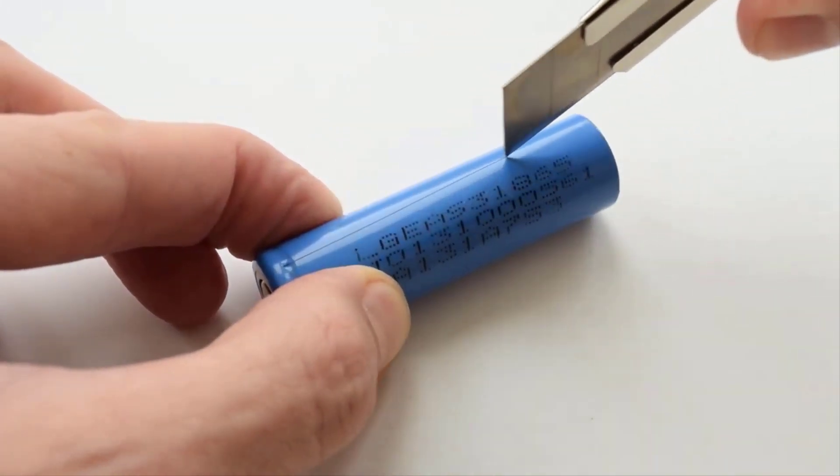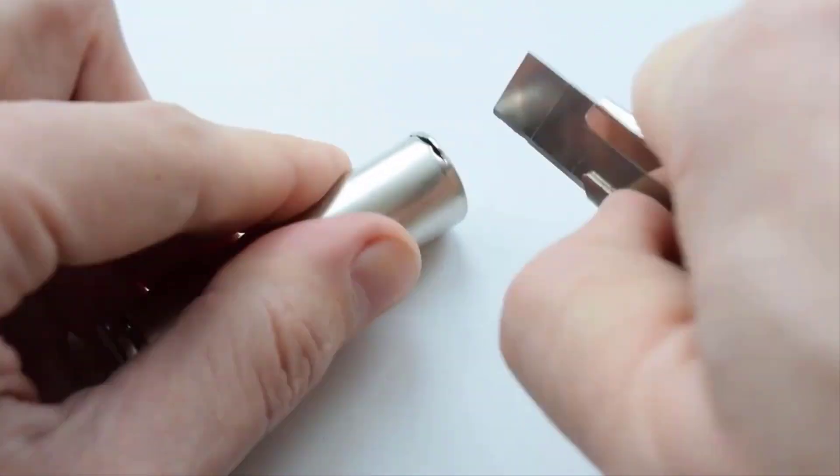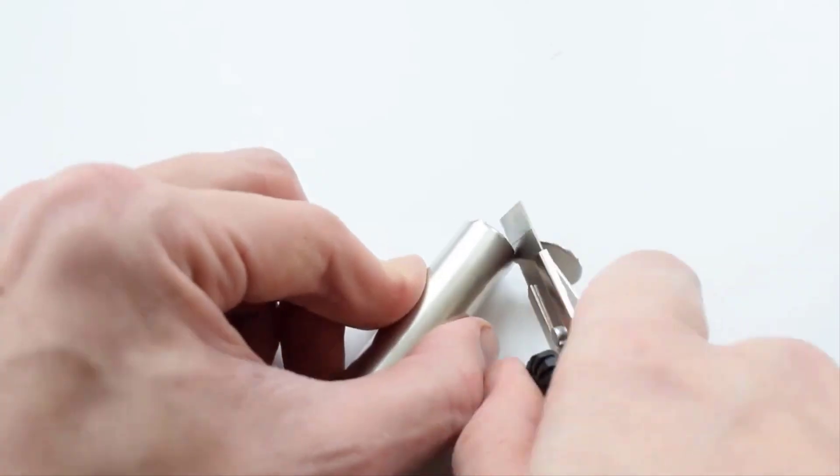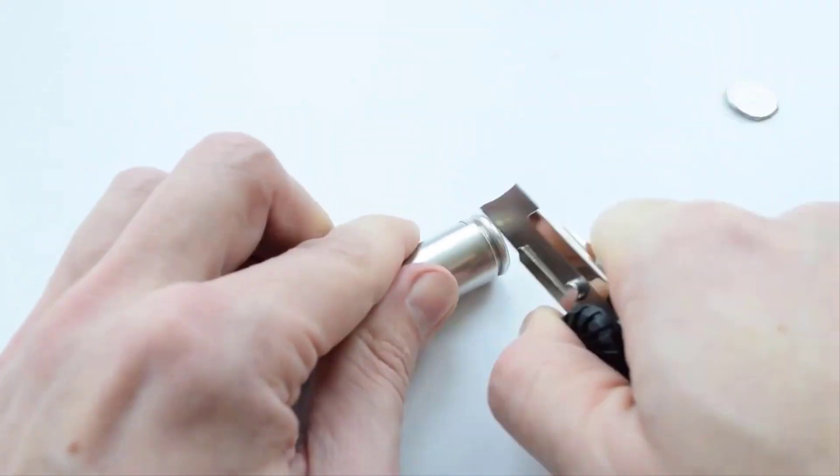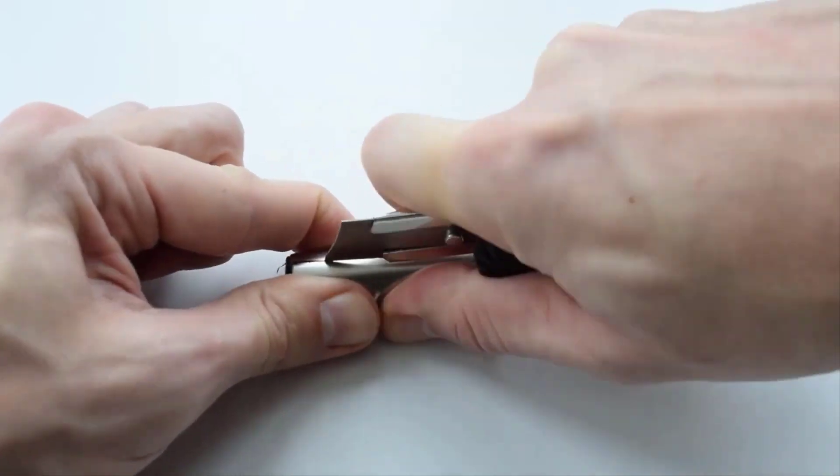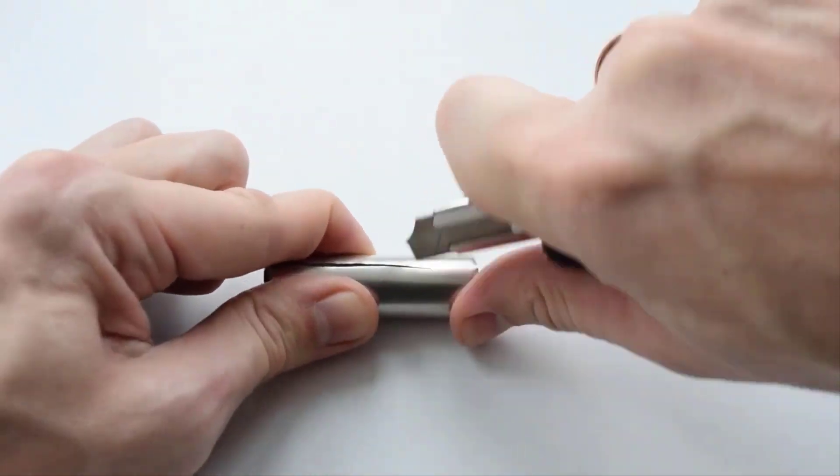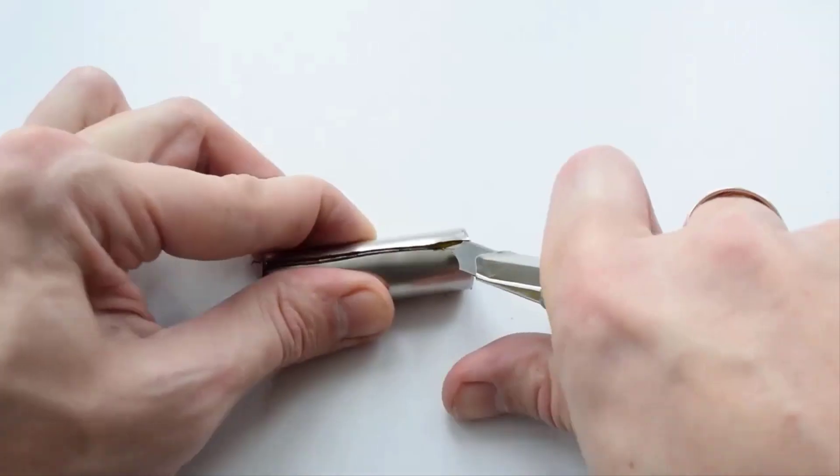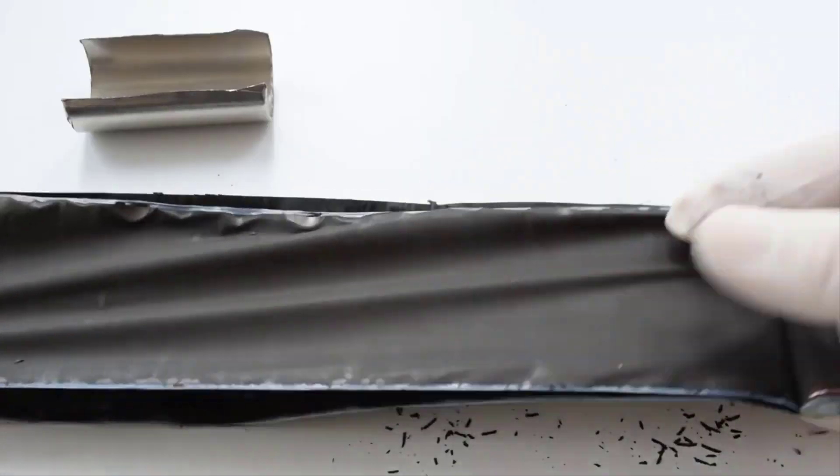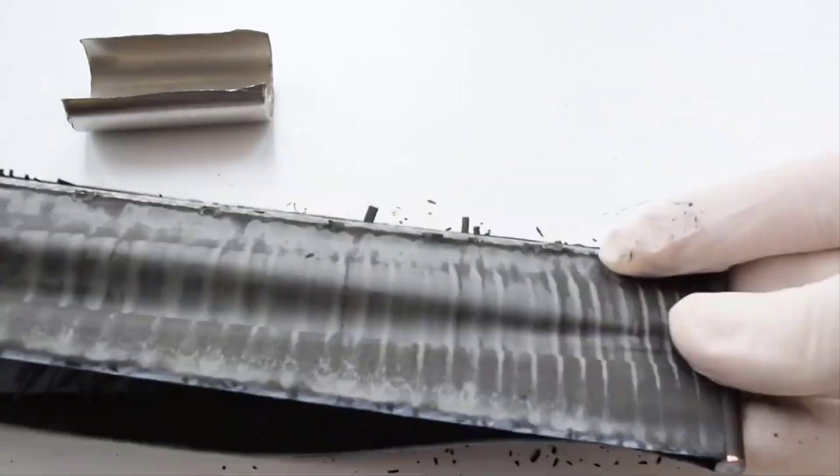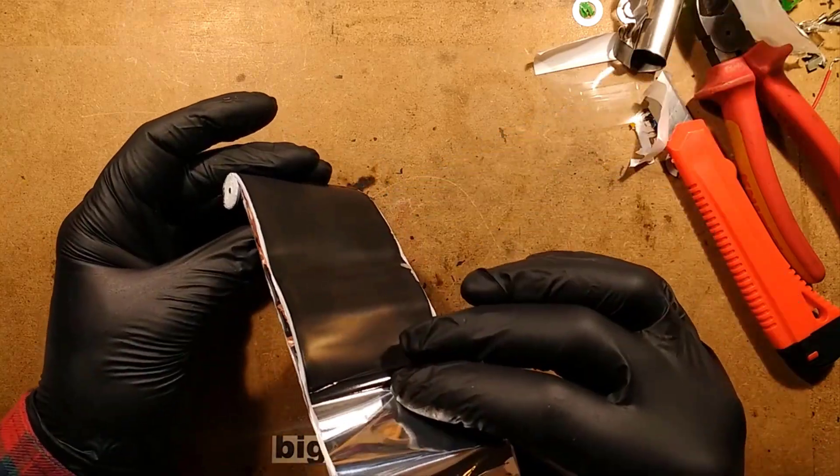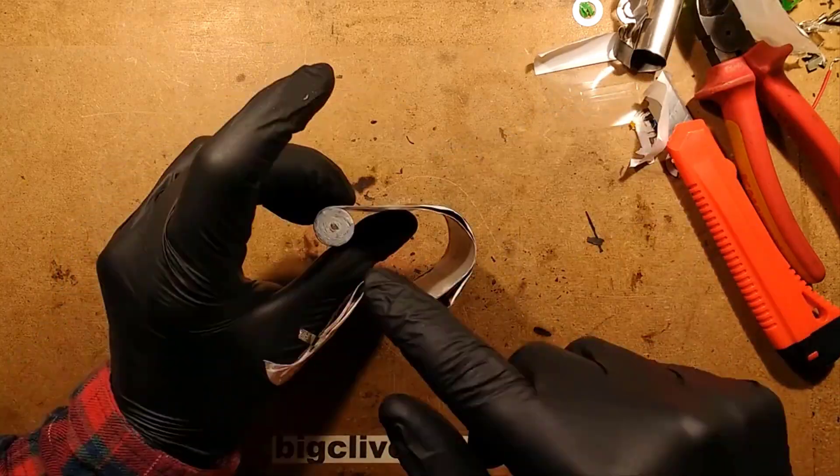I brought some teardown videos of lithium ion batteries from fellow youtubers. I appreciate their work to provide valuable information and knowledge. You can observe the same thing as explained in the animation on the teardown videos. There are some foils and graphite and metal oxide is coated on the foils.